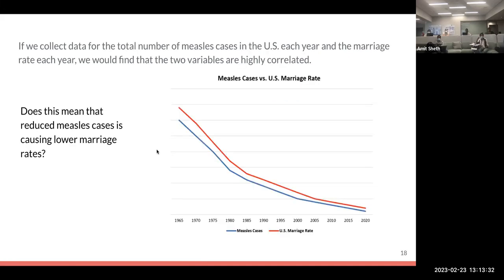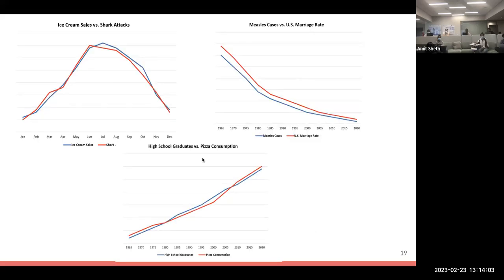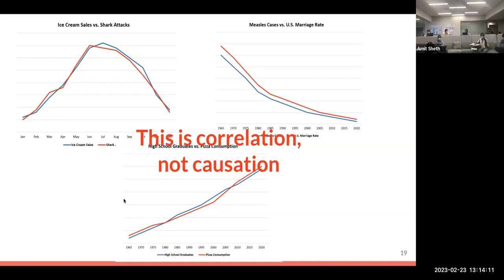Another example is if we collect data from the number of measles cases in the U.S. and the marriage rate each year, we would see this pattern. Does this mean reducing measles cases is causing lower marriage rates? Of course not. Modern medicine should have caused the reduction of measles cases and people may not marry for various reasons each year. Another example like high school graduates versus visa consumption shows this kind of pattern. Obviously this is only correlation but not causation. The problem here is that these examples may look silly, but mistaking correlation for causation is actually a very big problem in forecasting.